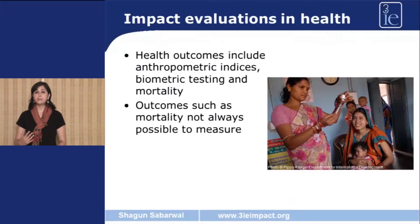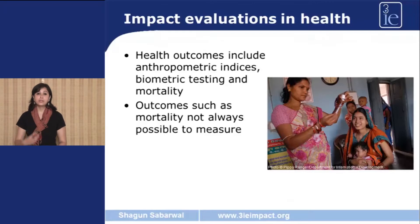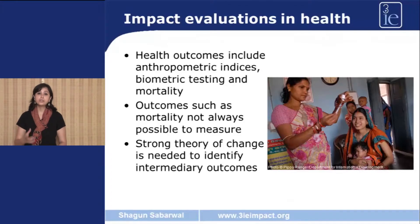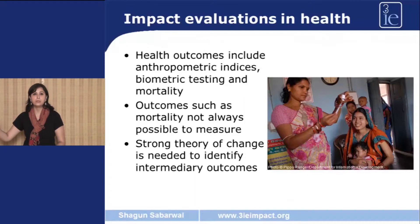Another important point to keep in mind is that for many programs, the ultimate objective might be to change mortality — say, maternal mortality. But maternal mortality is not easy to measure and you actually require a large population to get these estimates. So in that case, it's important to measure intermediary outcomes. A strong theory of change can be very important in identifying what those intermediary outcomes will be. For example, in the case of maternal mortality, we might actually be able to measure how many women gave birth in proper facilities, or how many women went to antenatal clinics during their pregnancy.